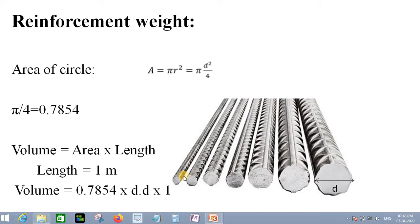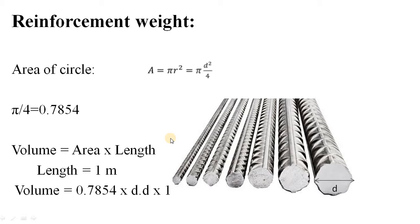For a civil engineer, it is very important to know how to calculate the unit length weight for any reinforcement bar. At your site, during preparation of a bar bending schedule, it is important to know the unit length weight for each type of bar, whether it is a 6mm, 10mm, or 25mm diameter bar. In this video I will discuss how to find the unit length weight of any diameter bar, and at the end I will verify against our standard code.